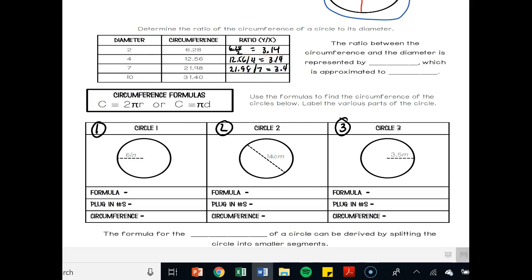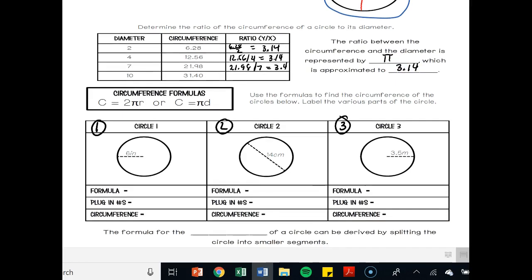Hopefully, you're seeing a pattern, right? So the ratio between the circumference and the diameter is represented by pi, which is approximated to 3.14. So this is where this magical number pi comes from.